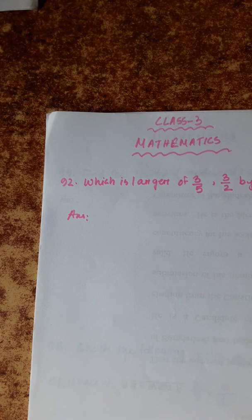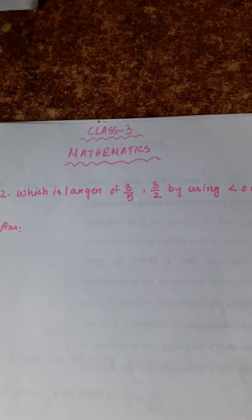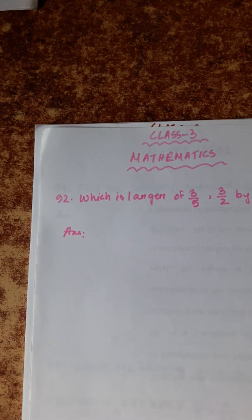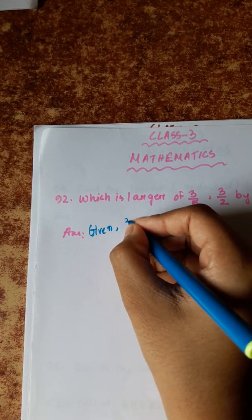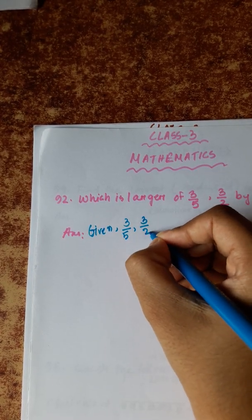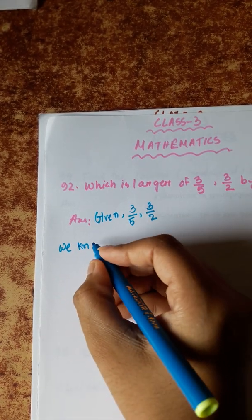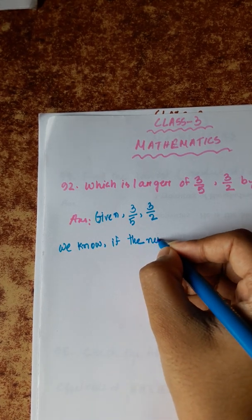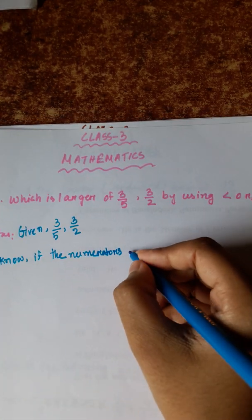Question 92: Which is larger — 3/5 or 3/2 — using greater than or smaller than sign? Given: 3/5 and 3/2. We know, if the numerators are the same...